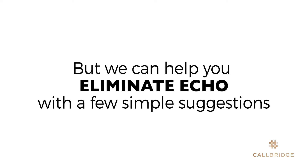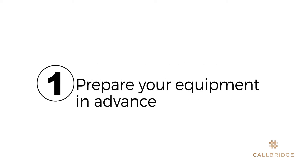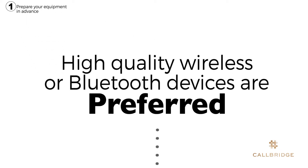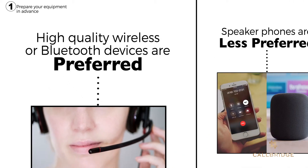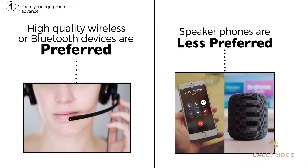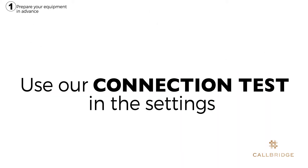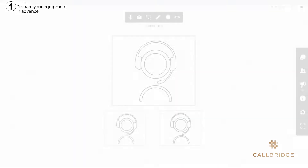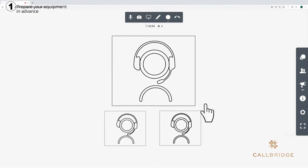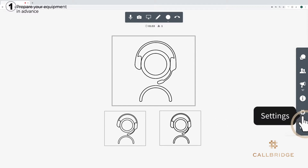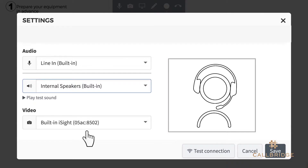The first suggestion is to prepare your equipment in advance. A high-quality wireless or Bluetooth device is preferred. Speaker phones are less preferred. You can test your connection using the connection test in the settings. This is a great way to check how well your equipment will sound in your conference call.